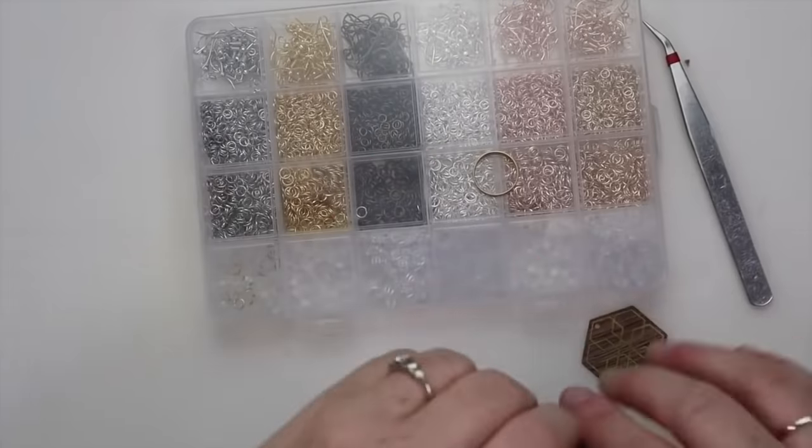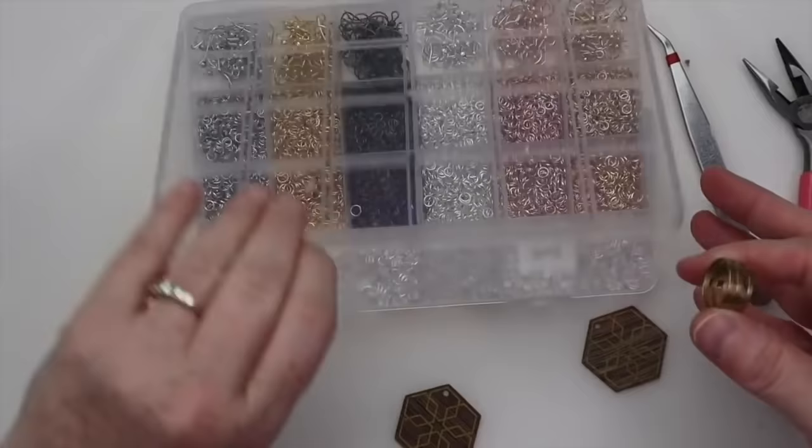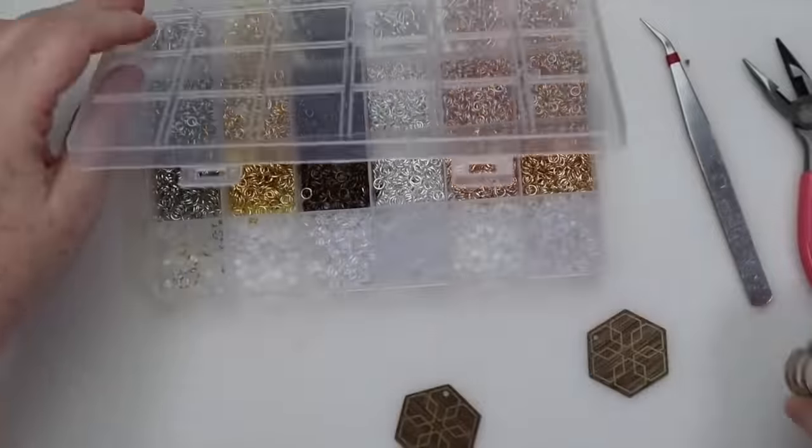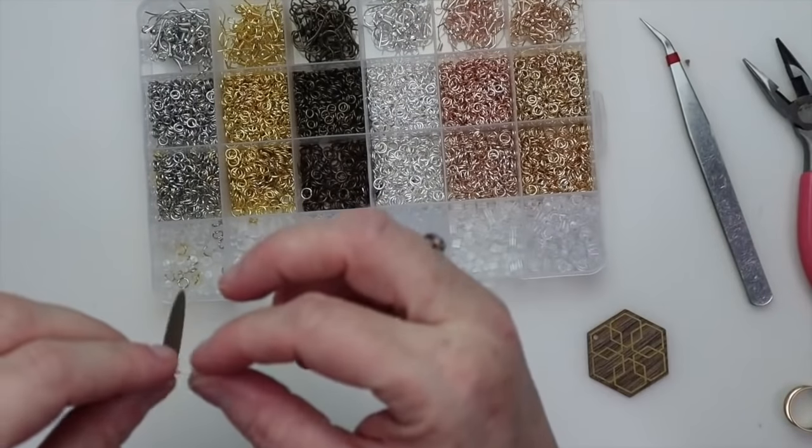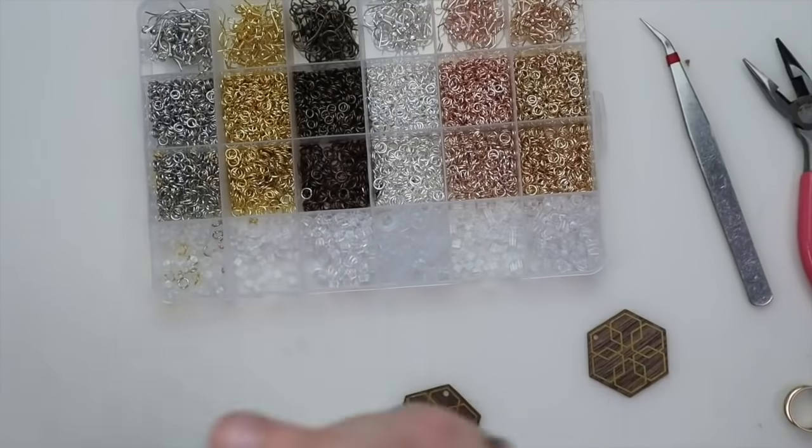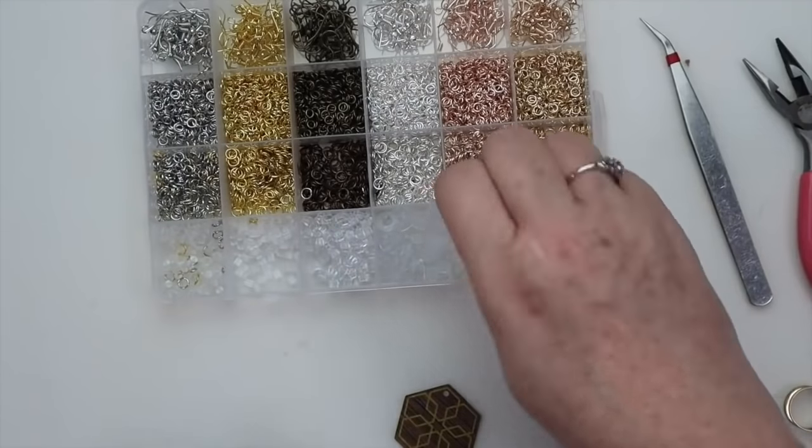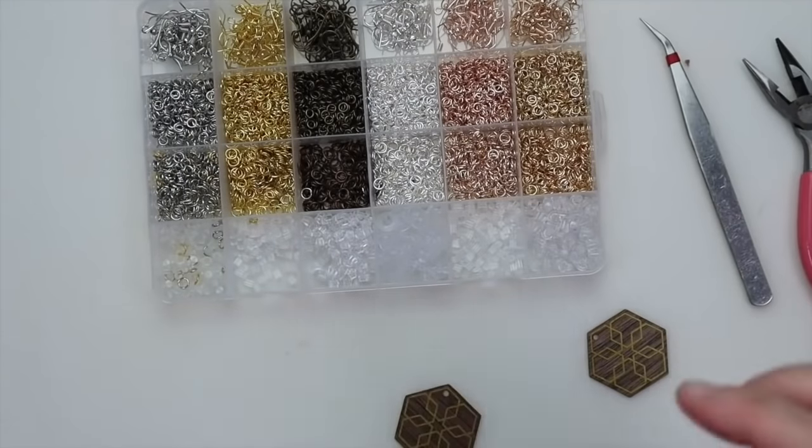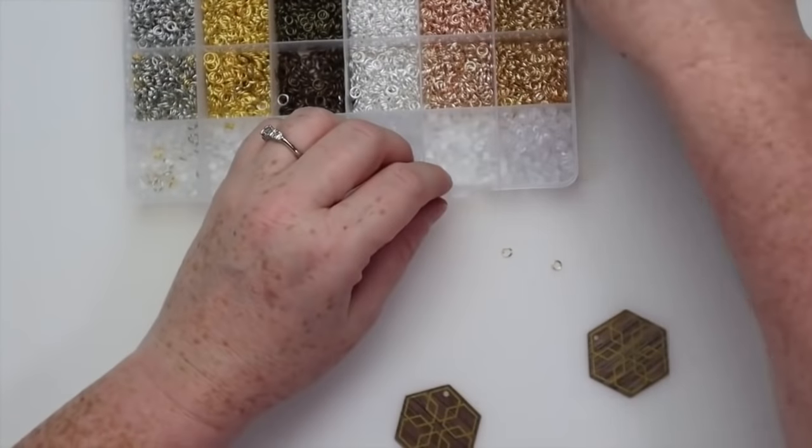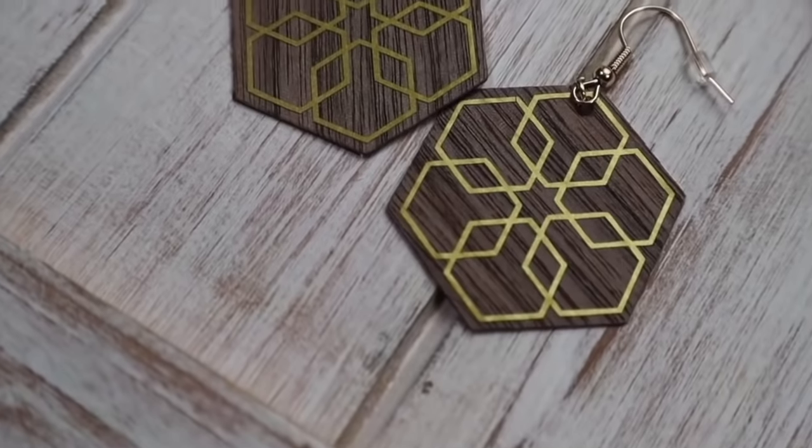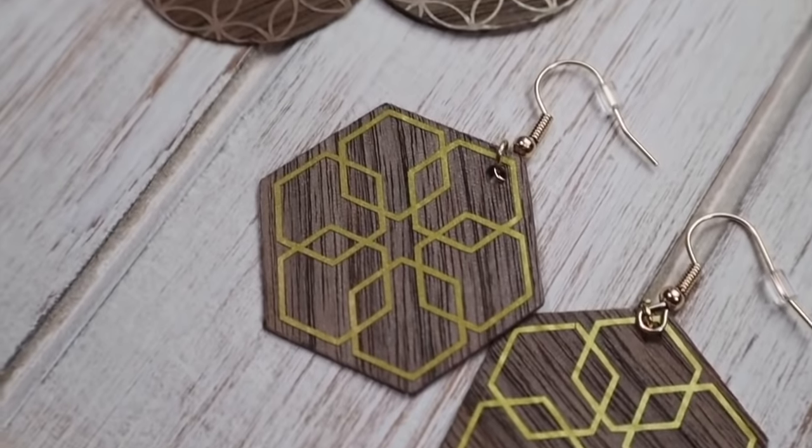The last step for the earrings is to attach the hardware. I got this huge pack - it comes in all these different shades of hardware, has the jump rings and the backing and all the good stuff that you need. I'll link everything down below in the description box. Then go ahead and attach the hardware to these. What's really awesome about them is you can make these custom if you know somebody and what they particularly like, then it just makes it extra special by making them something.